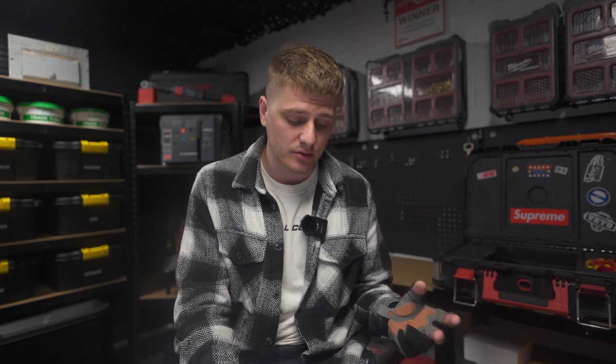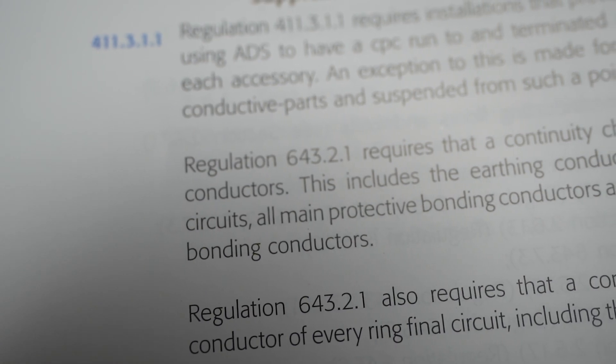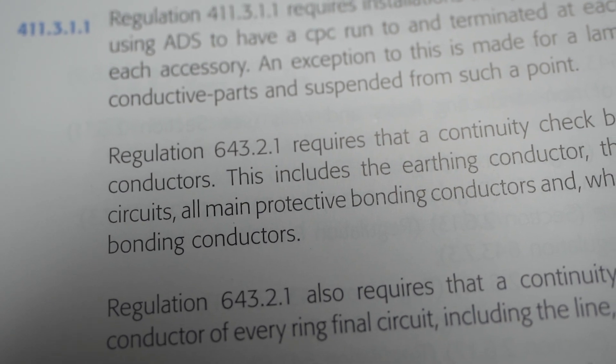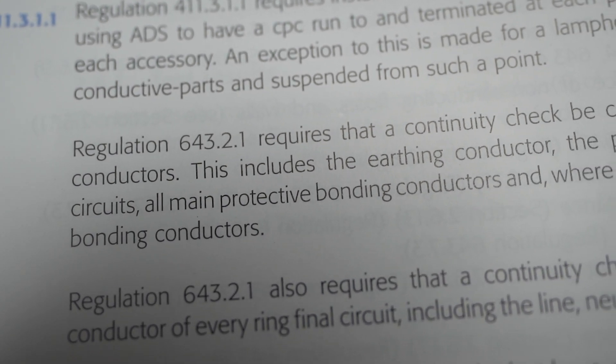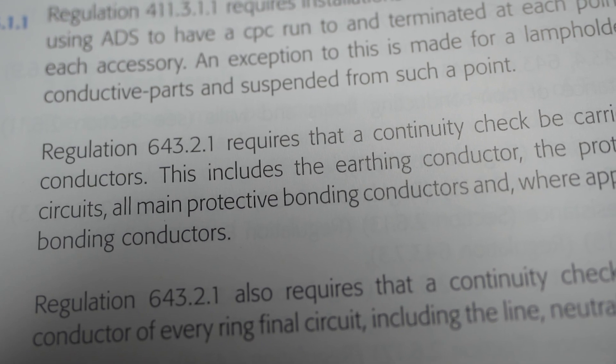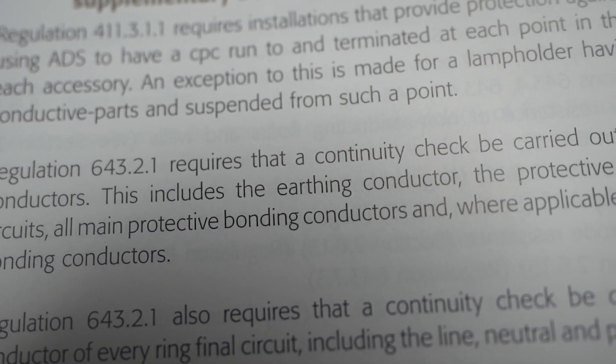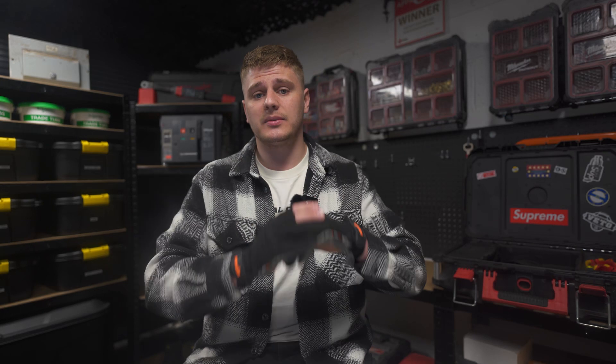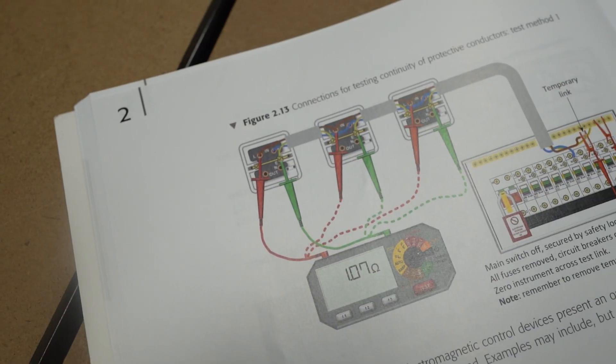The second thing we're required to do as electricians is regulation 643.2.1, which requires that a continuity check be carried out on all protective conductors. This includes the earthing conductor, the protective conductors of all circuits, all main protective bonding conductors, and where applicable, all supplementary bonding conductors as well. So not only do we need to make sure there's a CPC at all points of the circuit and all accessories, but we also need to test it at all points to verify its continuity.